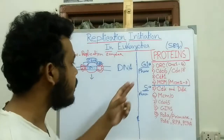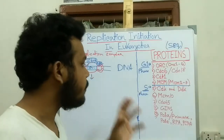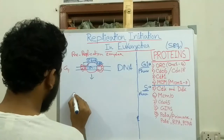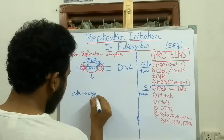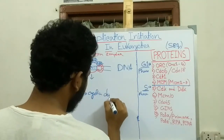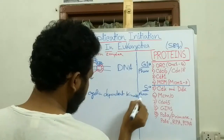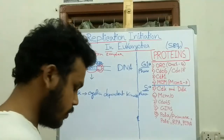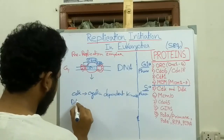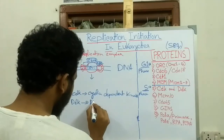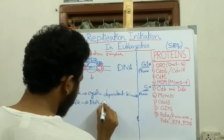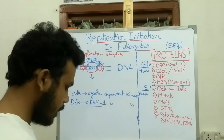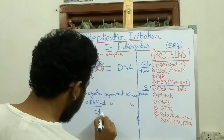When the cell enters into the S phase from the G1 phase, S phase-specific proteins like CDK and DDK are produced. CDK means cyclin-dependent kinase, and when cyclin-dependent kinase binds with cyclin it is activated. DDK means Dbf4-dependent kinase, and this protein has an activating subunit that is Dbf4 and a protein kinase that is CDC7.